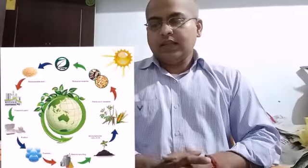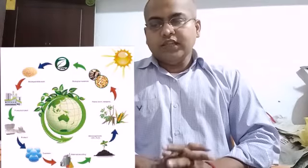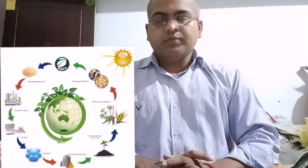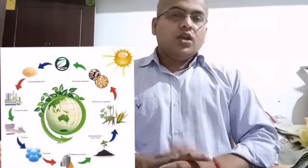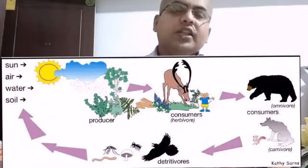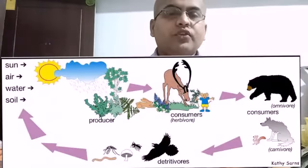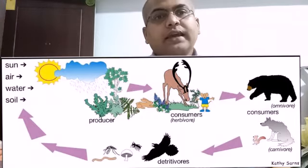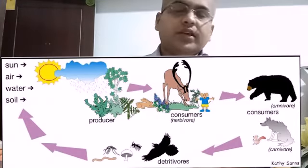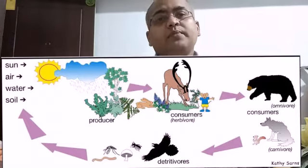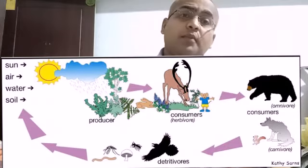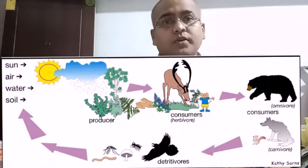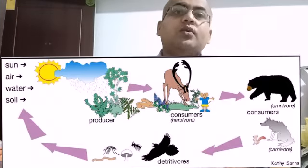The last question: Plants like croton, which have colorful leaves, can still make their food because beneath the colorful layer there is a layer of chlorophyll that helps the plant prepare food. But in mushrooms there is no chlorophyll, so mushrooms are not able to prepare their own food.